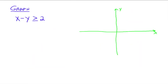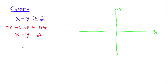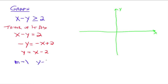Let's talk about graphing linear inequalities. We want to graph the inequality X minus Y is greater than or equal to 2. The first thing I recommend is to think of this inequality as an equation: X minus Y equals 2. We know how to graph that, so let's graph it first. Rewrite it in slope-intercept form: negative Y equals negative X plus 2, so Y equals X minus 2. The slope is 1 and the Y-intercept is (0, negative 2).